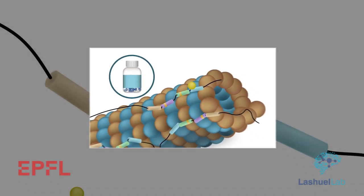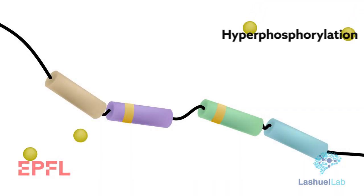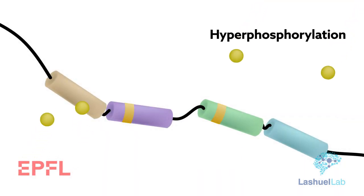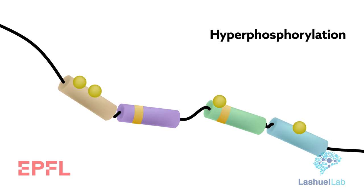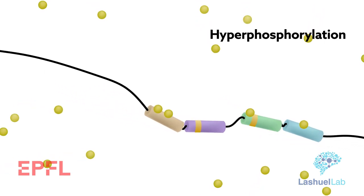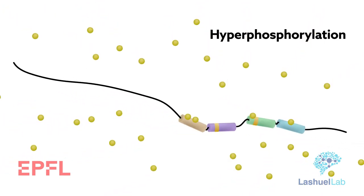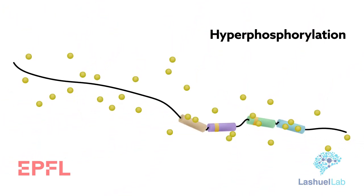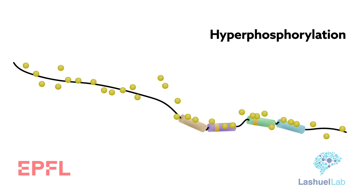Numerous studies have homed in on hyperphosphorylation as a trigger for tau pathologies. Unfortunately, they've done so with relatively poor resolution. Existing tools and methods tend to blanket tau with PTMs, unable to target any single site independently or to introduce phosphorylation at multiple sites with precision.